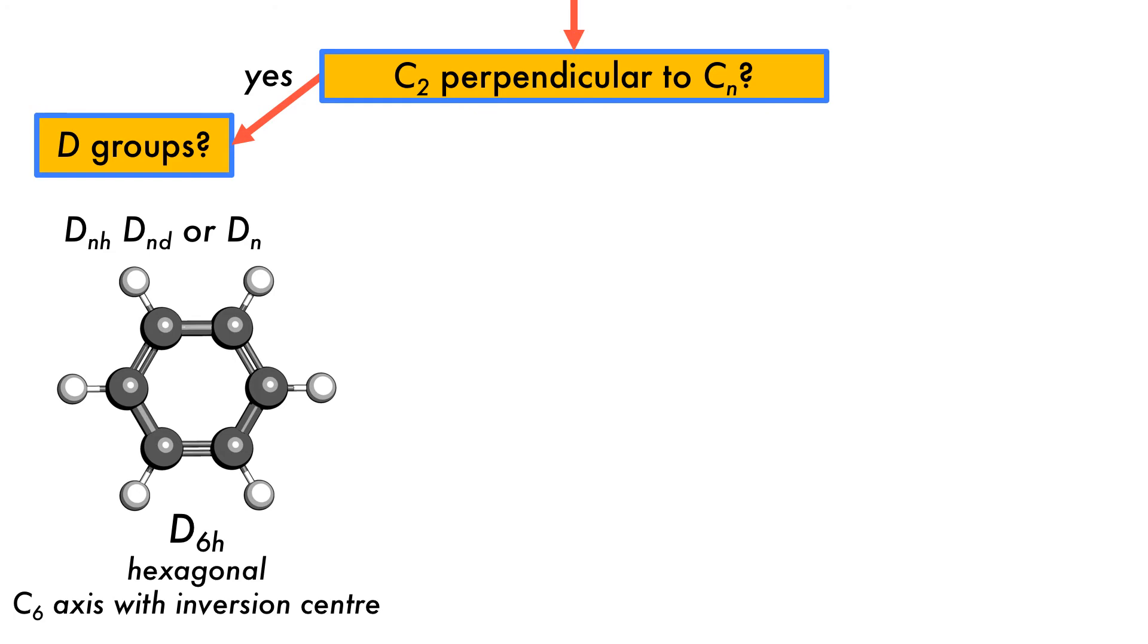DnH, represented by the hexagonal benzene, has a C6 principal axis, giving a point group of D6H, with an inversion center.